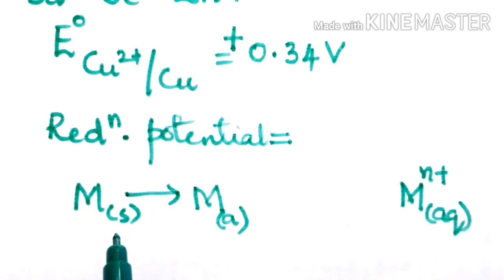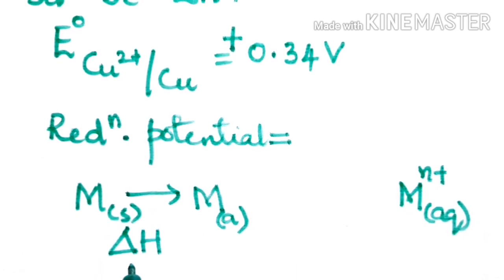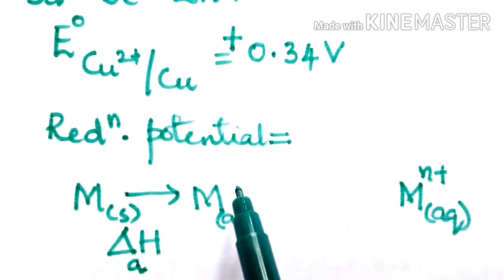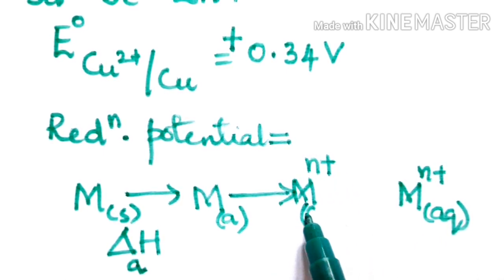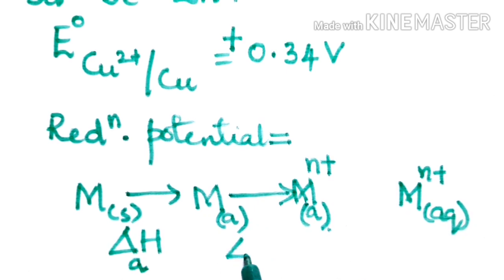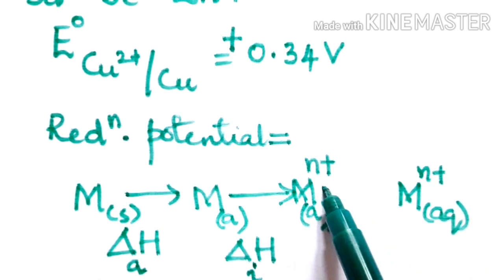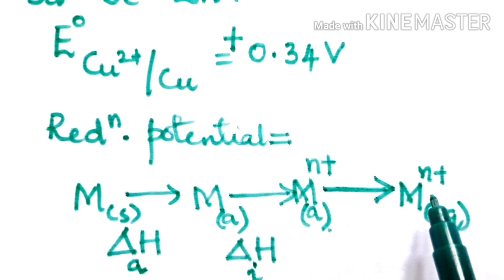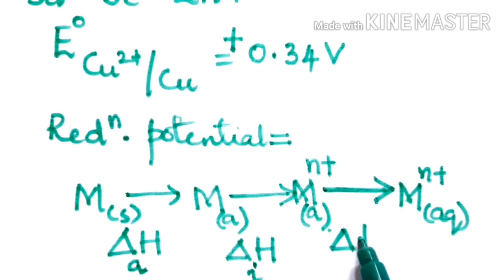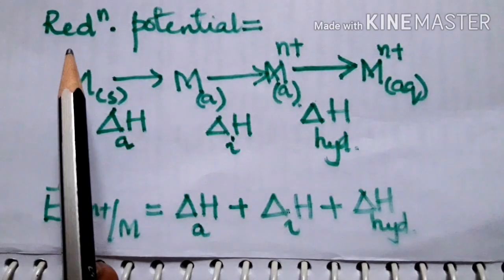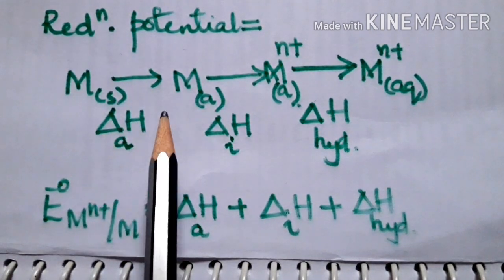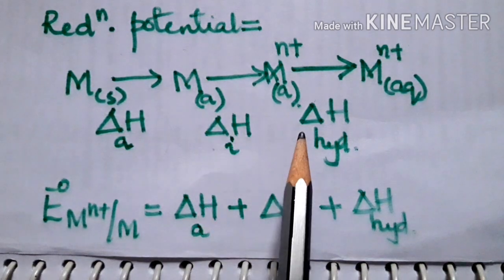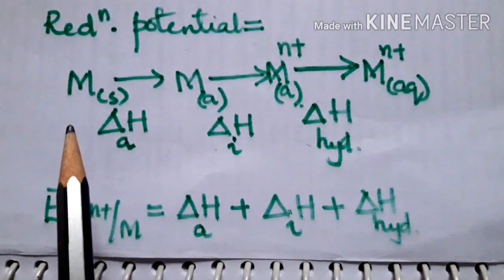The energy change required for this conversion is known as the enthalpy of atomization. Next, the metal changes into a metal ion in the atomic state — the energy required here is known as the enthalpy of ionization. Finally, this is converted to metal ion in the aqueous state by releasing energy known as hydration enthalpy. So, reduction potential is the sum total of enthalpy of atomization, ionization enthalpy, and hydration enthalpy.